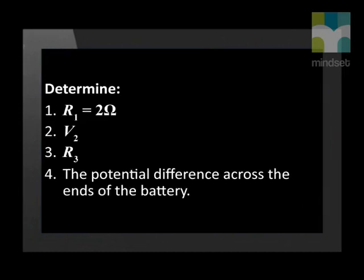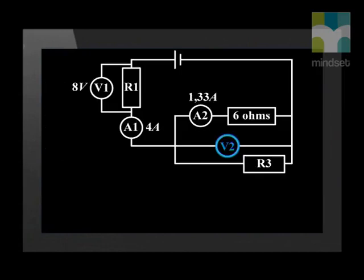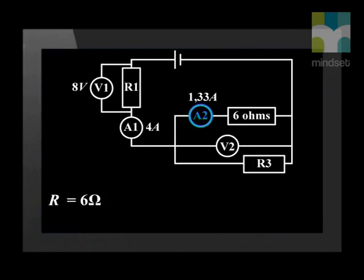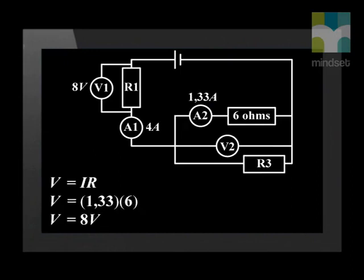In the next question, we need to determine voltage V2. We can see that V2 is across both the 4 ohm resistor as well as across R3. Since we have more information about the 6 ohm resistor, we will use this to calculate V2. The resistance equals 6 ohms, and we were told that A2 equals 1.33 amperes. Using Ohm's law to calculate the voltage, V2 equals 6 times 1.33, which gives us a voltage reading of 8 volts.